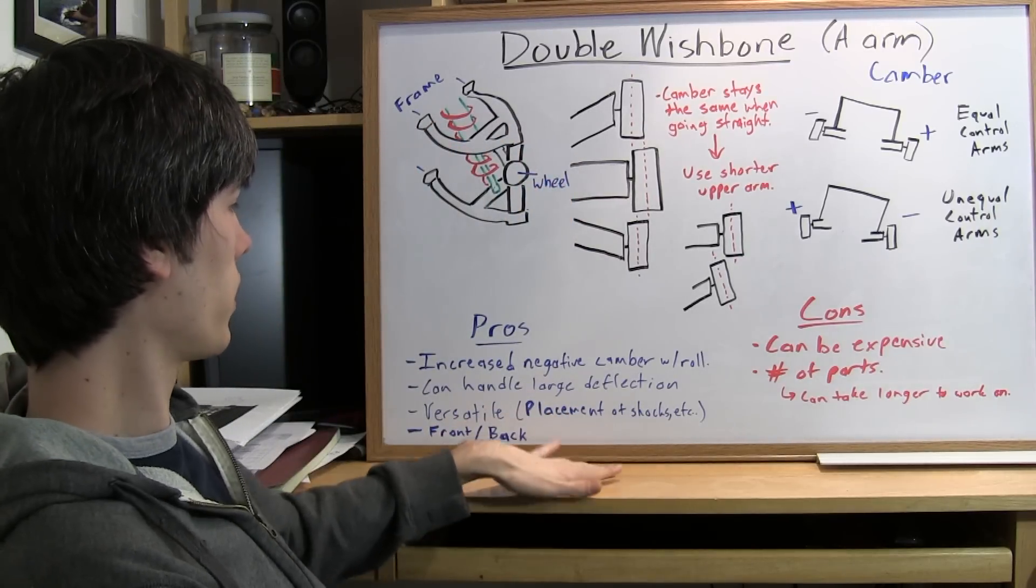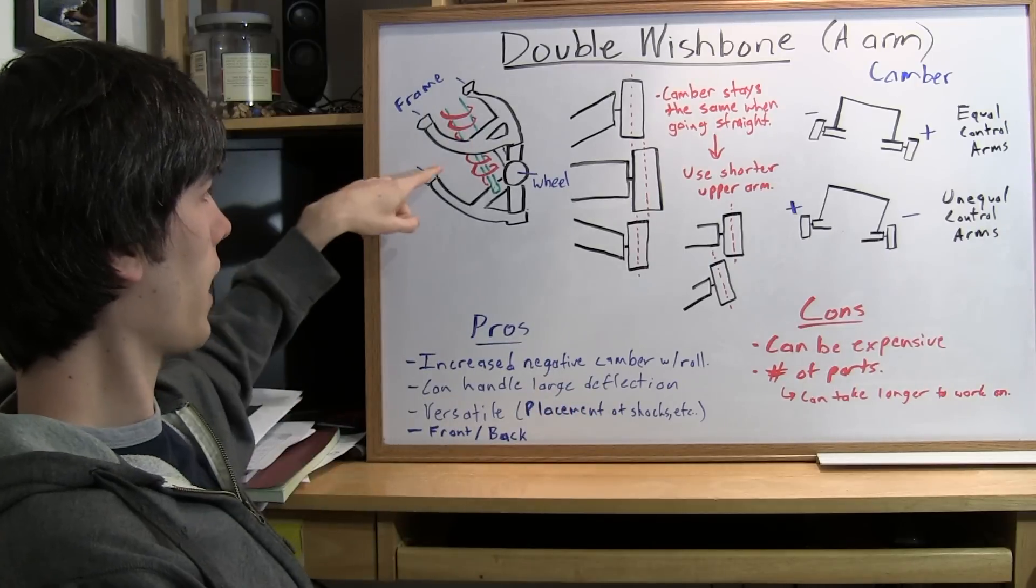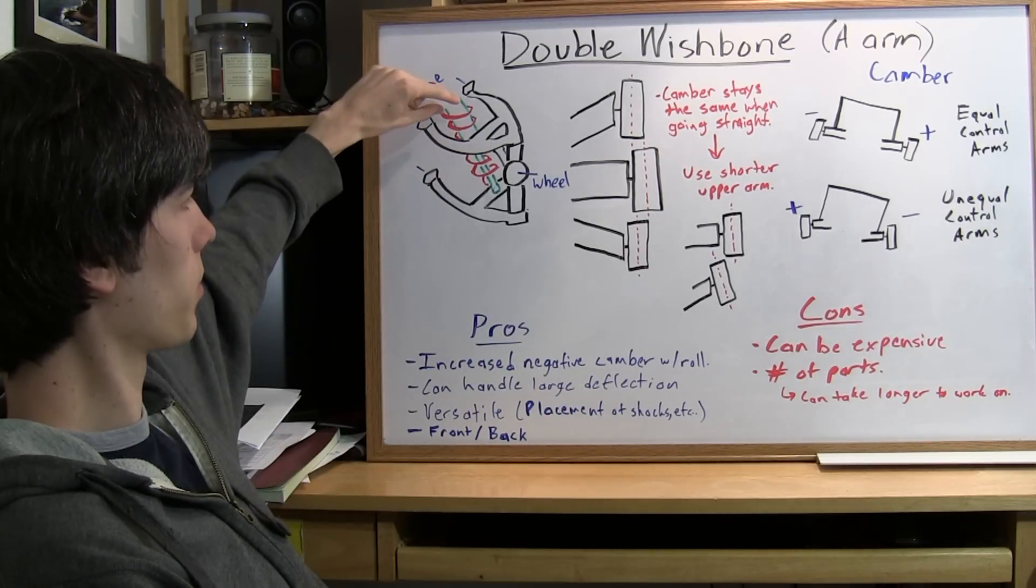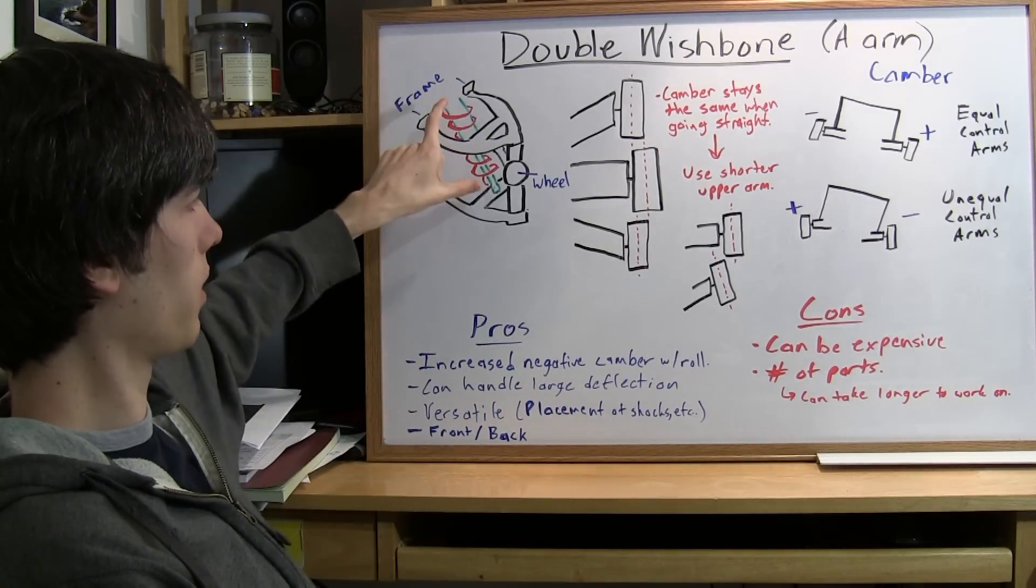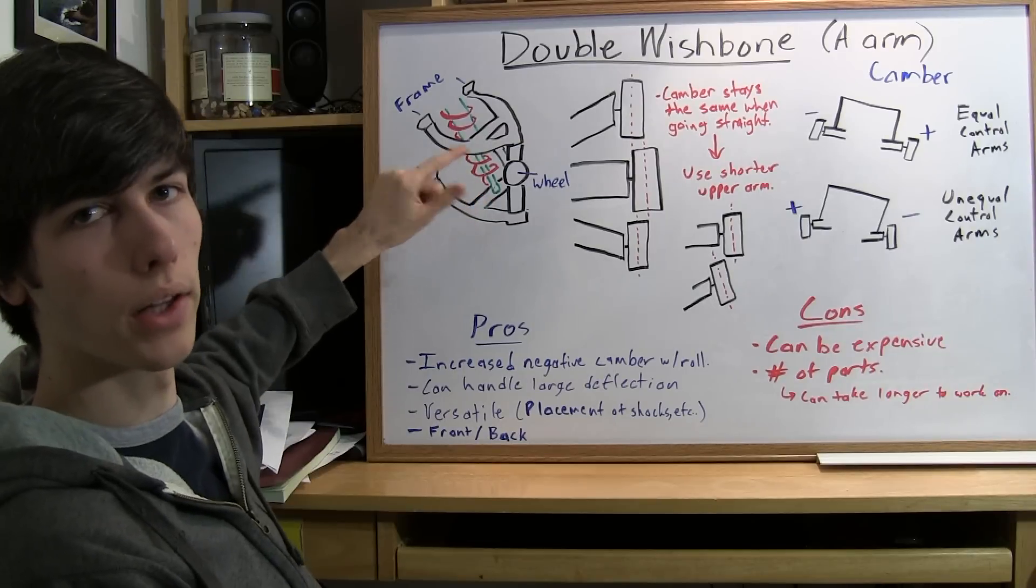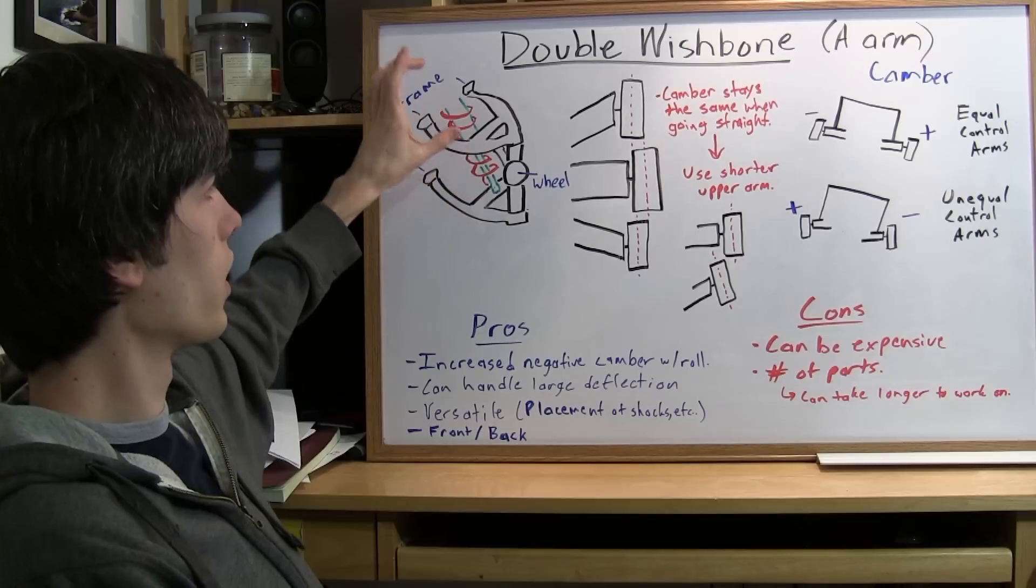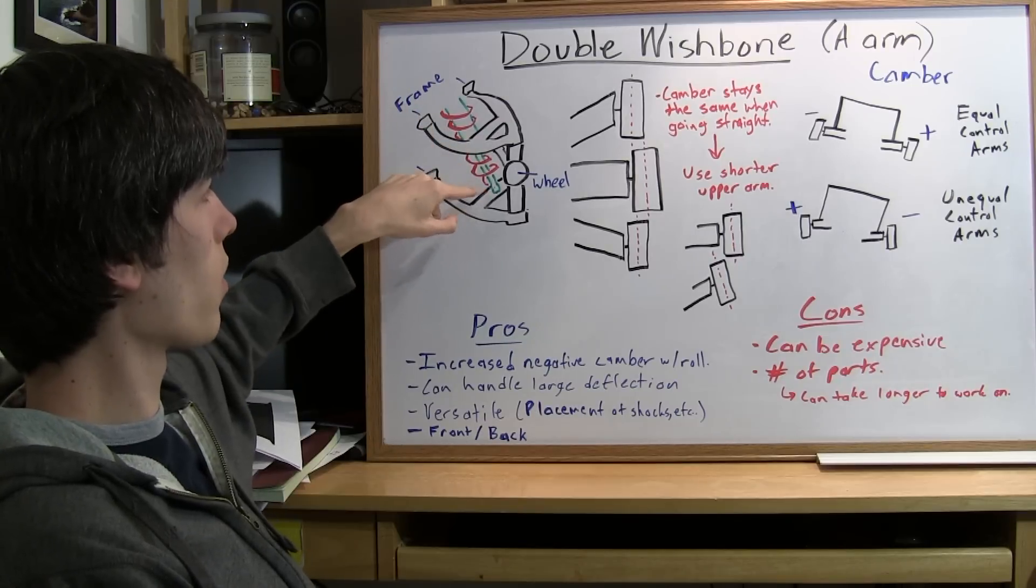Versatile. The reason I say versatile is because in this picture I've got the shock absorber and the spring both together mounted to the lower control arm. Well, it doesn't need to be like that necessarily.